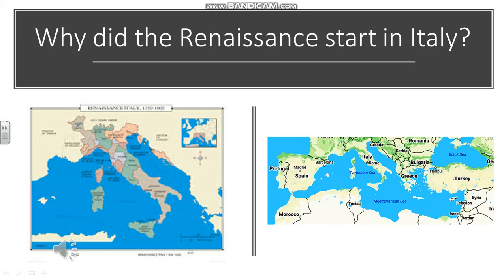You may be wondering why the Renaissance started in Italy. Well, it's a number of factors. One is geographical. If you look at the map on the right, you can see how Italy really is in the centre of the Mediterranean, and therefore it gets influenced from the Middle East. We've talked about the importance of Islamic learning — that was coming across through the Mediterranean and Italy obviously picked up on that as well.